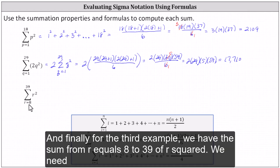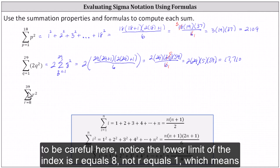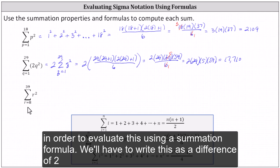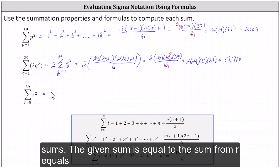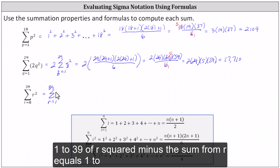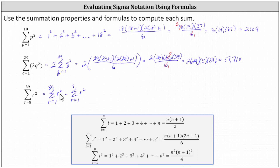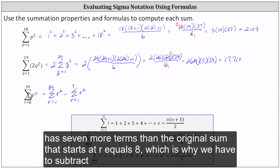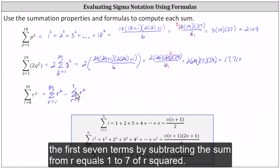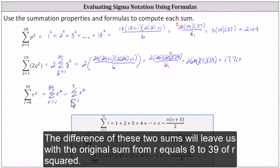For the third example, we have the sum from r equals 8 to 39 of r squared. We need to be careful here — notice the lower limit of the index is r equals 8, not r equals 1. In order to evaluate this using a summation formula, we'll have to write this as a difference of two sums: the sum from r equals 1 to 39 of r squared, minus the sum from r equals 1 to 7 of r squared. This subtracts the first 7 terms, leaving us with the original sum from r equals 8 to 39.